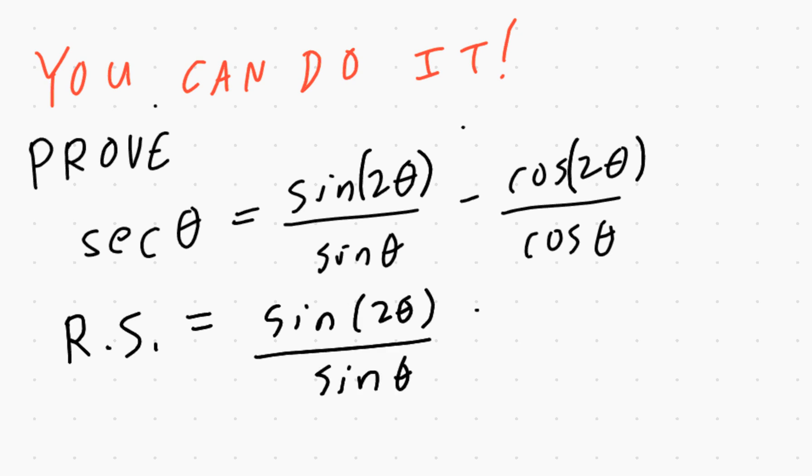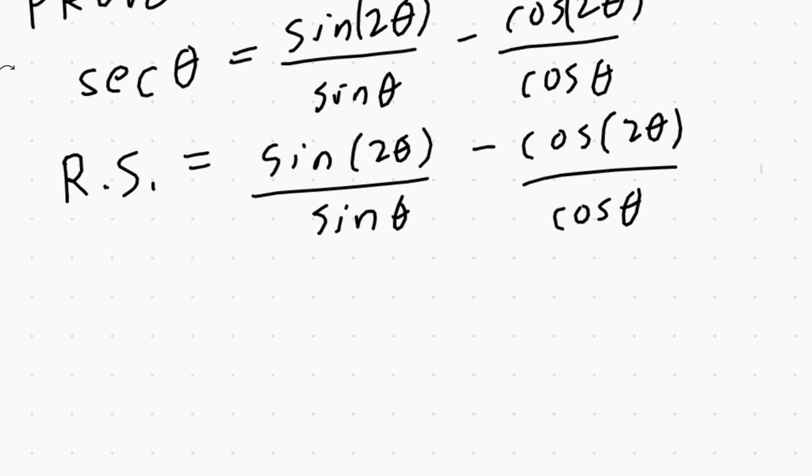So step one, copy the right-hand side. Step two, begin with the end in mind. Your goal is to express this in terms of secant theta. So in your mind, you're thinking, secant theta is 1 divided by cosine theta—that's my end goal. So step two is to rewrite this in such a way that I can get closer to the final answer.